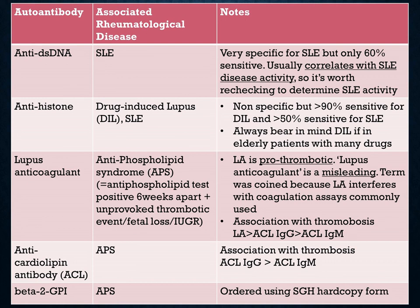Lupus anticoagulant is prothrombotic and is an antiphospholipid antibody, but the name is misleading — the term was coined because lupus anticoagulant interferes with coagulation assays commonly used. The associations of antiphospholipid antibodies with thrombosis are: lupus anticoagulant, anticardiolipin IgG, and anticardiolipin IgM. Antiphospholipid syndrome consists of antiphospholipid tests positive six weeks apart, plus an unprovoked thrombotic event, fetal loss, or intrauterine growth retardation.